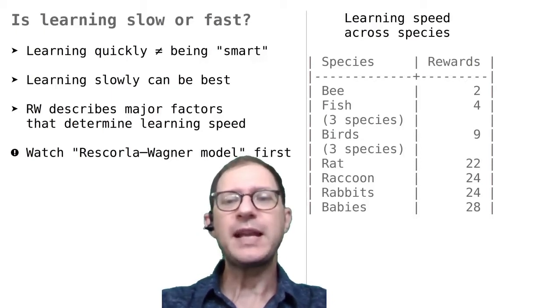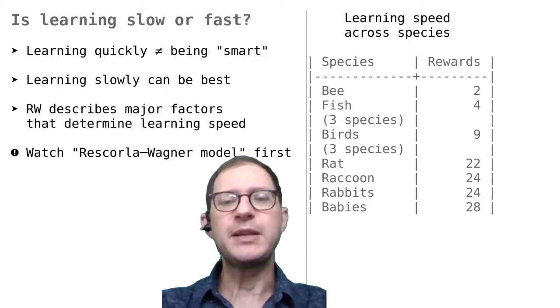A second thing I'd like to show is why learning more slowly can actually be better than learning quickly. The third thing is that we can understand many things about learning speed using the Rescola-Wagner model. As usual, I will just say RW instead of Rescola-Wagner. Please review the model before going on.